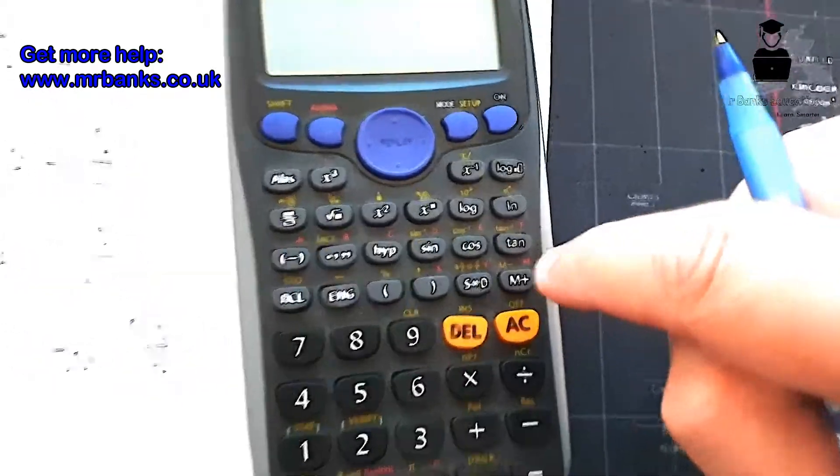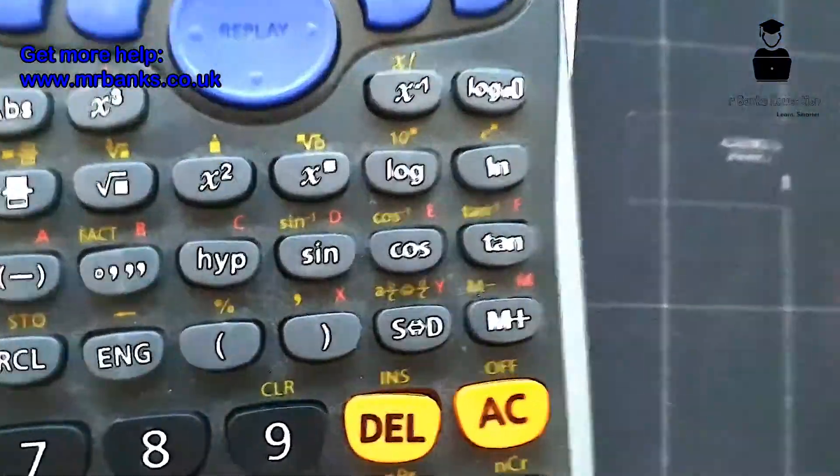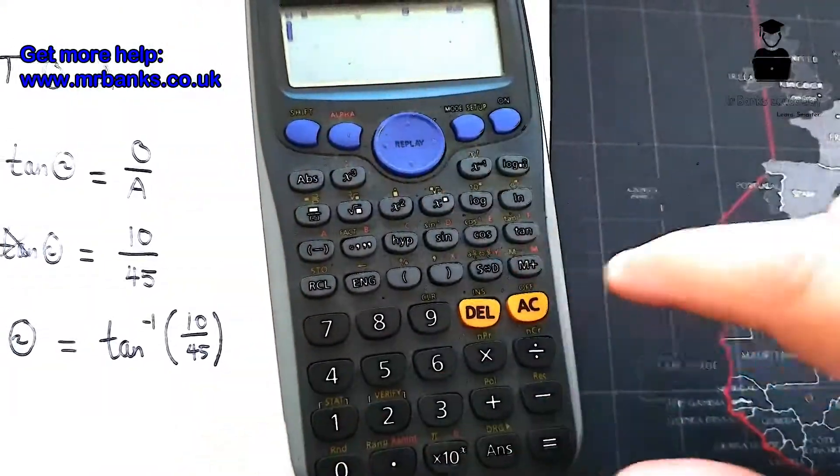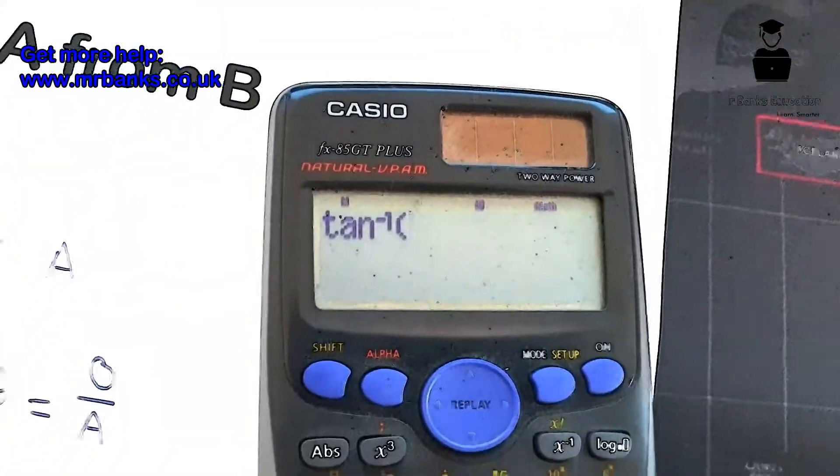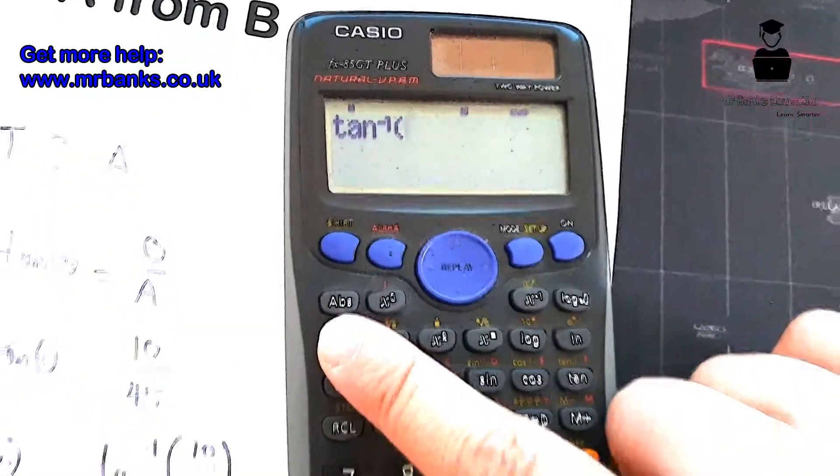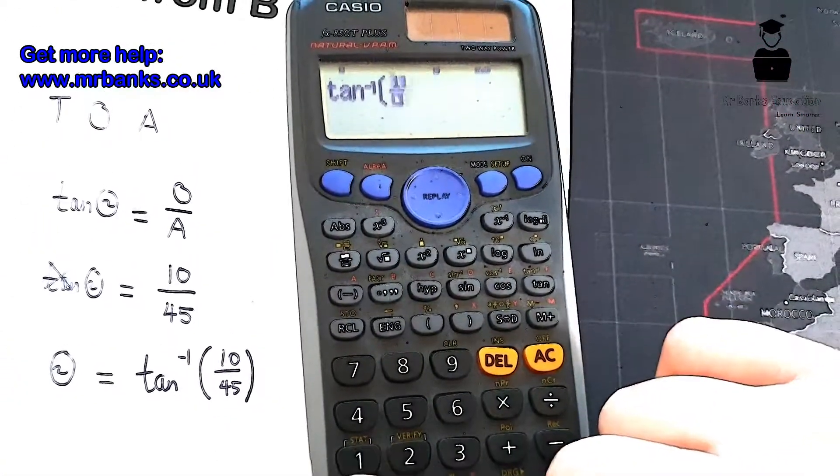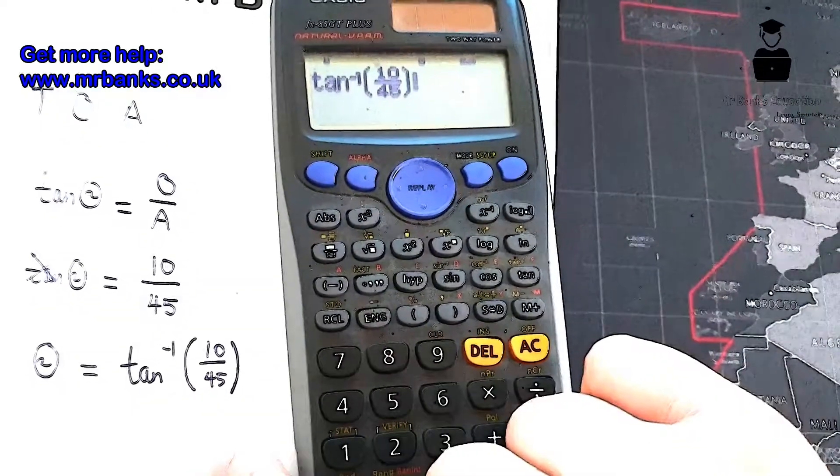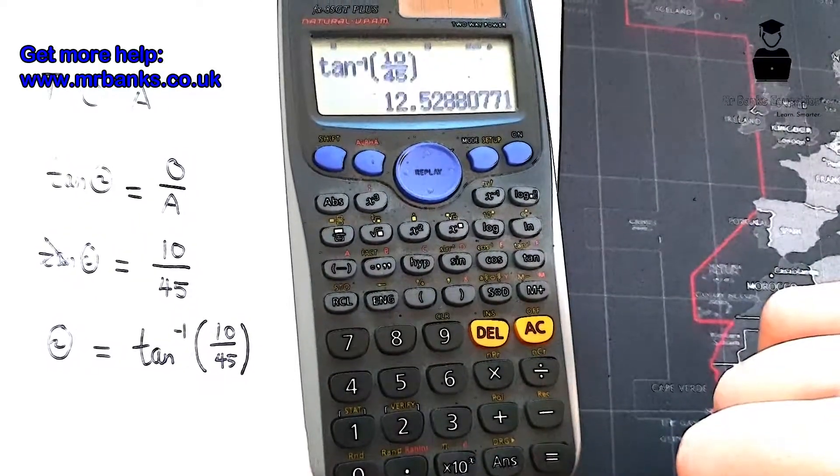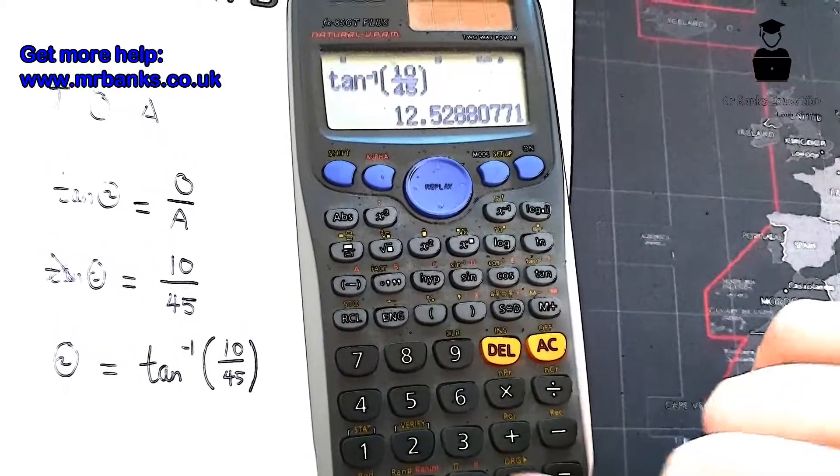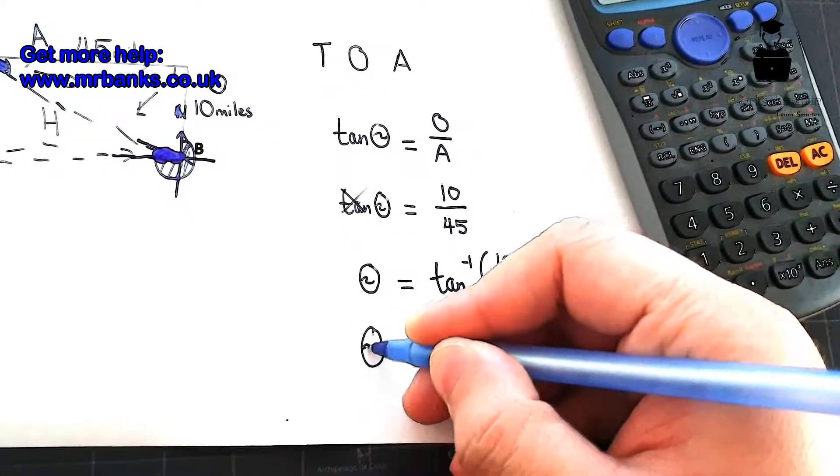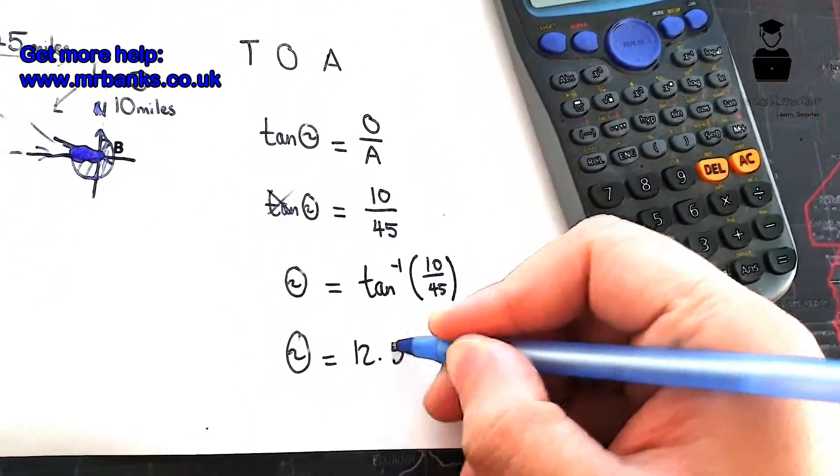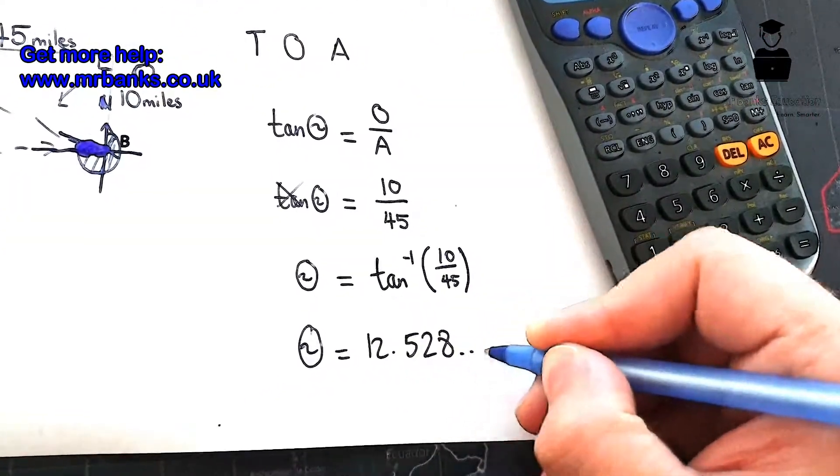So to get tan minus one, here's the tan button, but can you see right here if we press the shift key, we're going to get tan minus one on the screen. So we open up our fraction and we put 10 over 45, just like we see it here. Press equal sign, it makes 12.52. So the angle equals 12.528 dot dot dot.